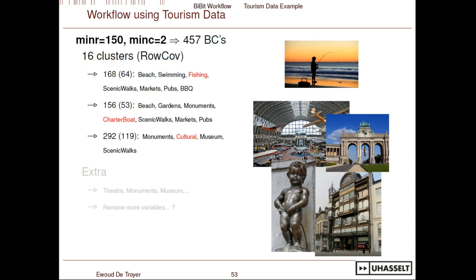Tweaking parameters further — going to even smaller bi-clusters with 150 rows — we see other activities appearing, like people combining beach, swimming, and fishing. There's also a very strong pattern of culturally inclined people visiting museums, monuments, and walking around the city. A continued analysis could involve removing even more variables to examine rare activities and see which of those rare activities appear together in bi-clusters.